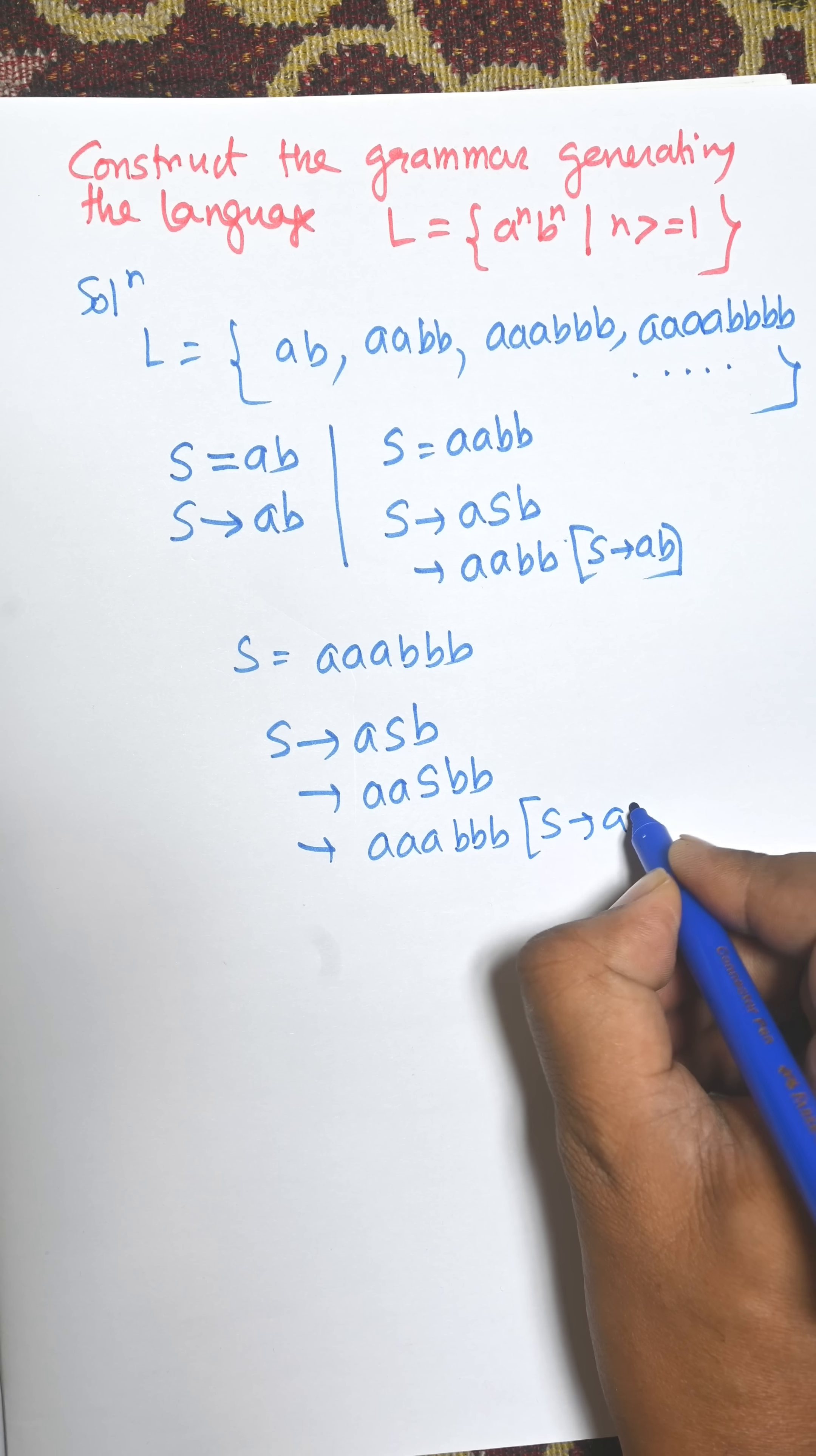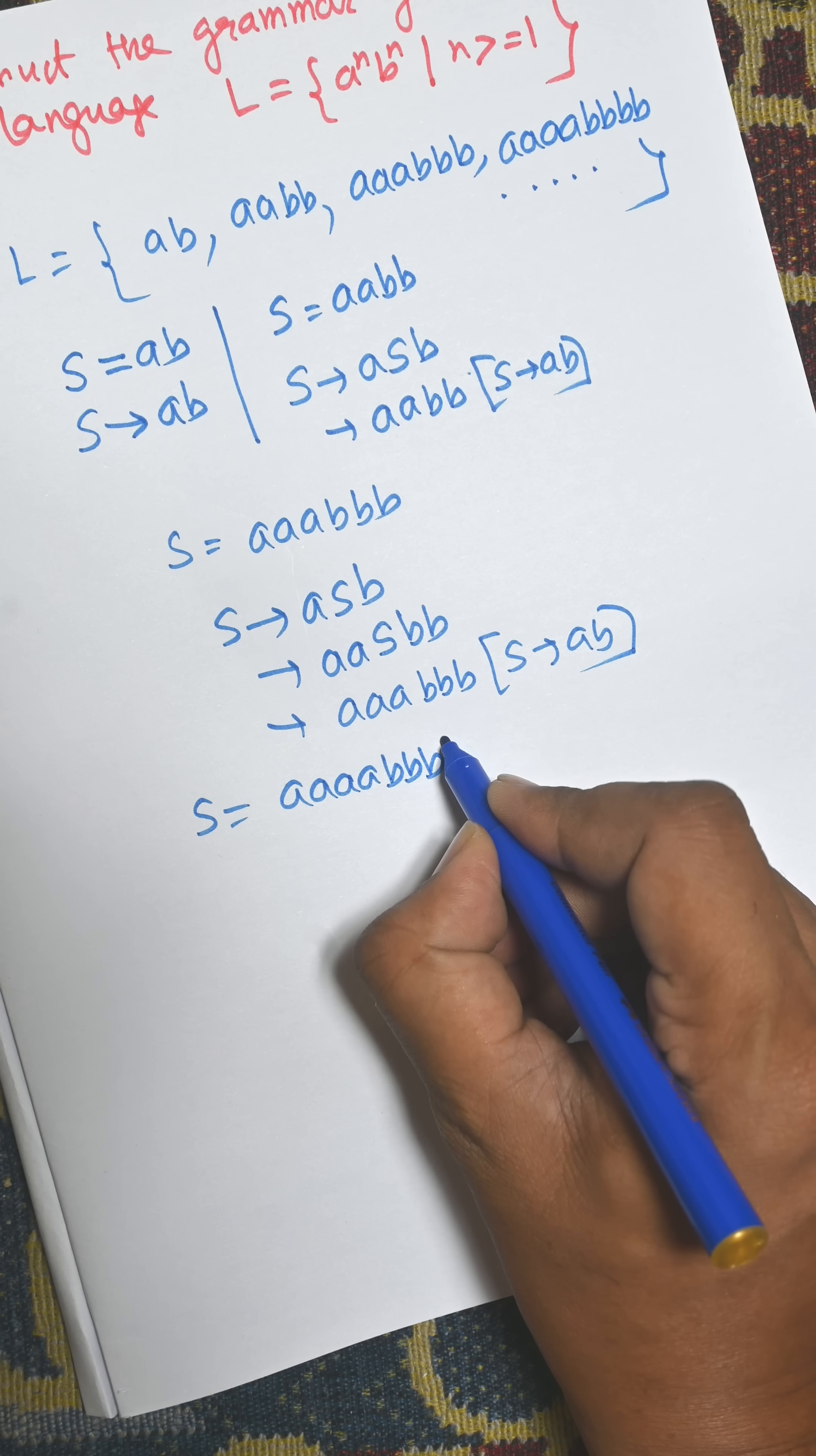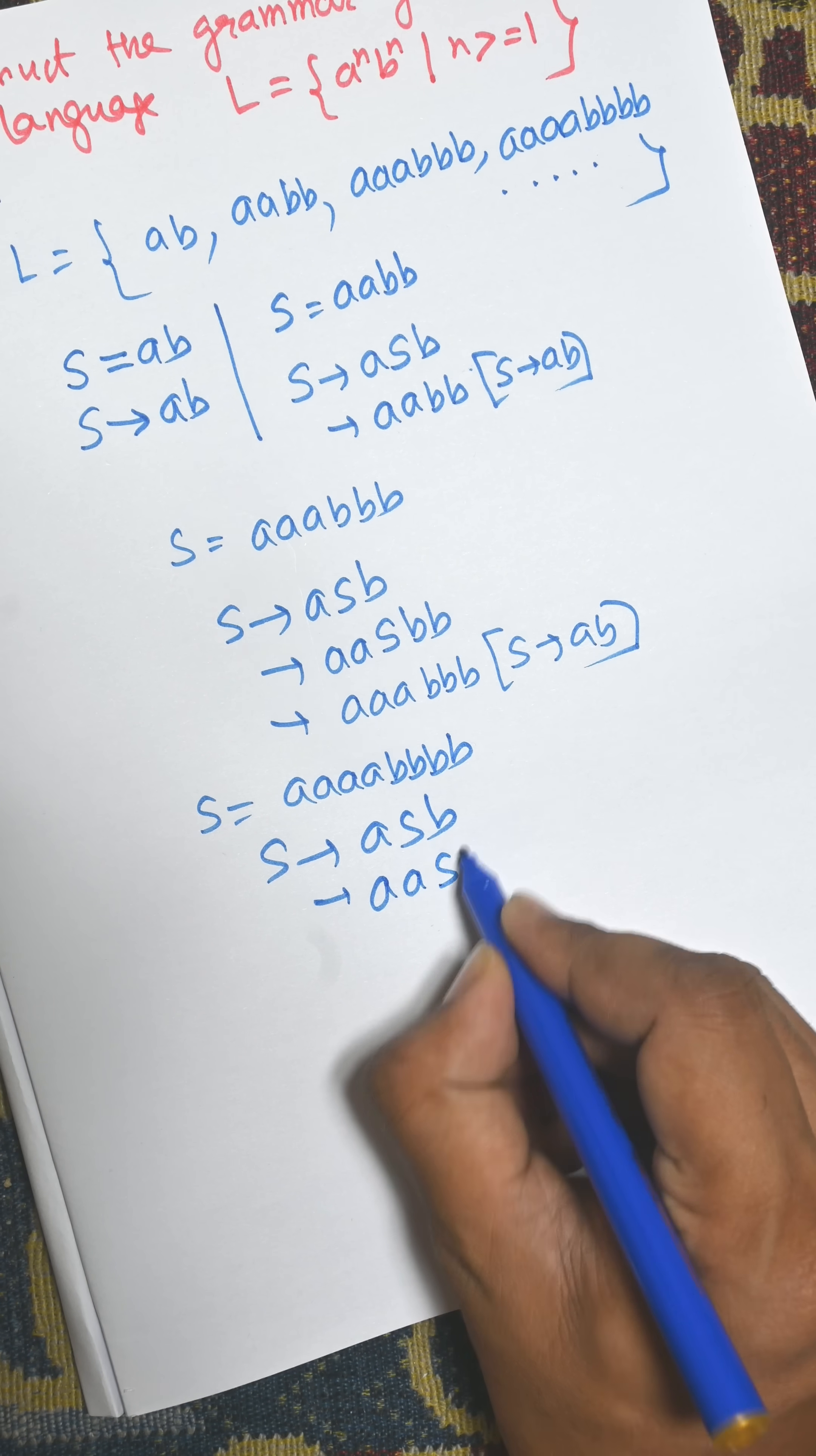Similarly, for AAAABBBB (4A and 4B), we start with S goes to ASB, then put the value of S as ASB again, giving us AASBB, and continue this process.